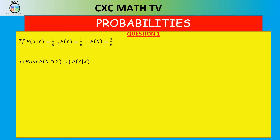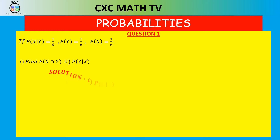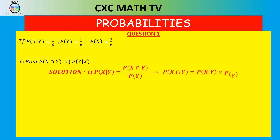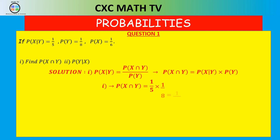The probability of X given Y is one over five, P(Y) is one over eight, and P(X) is one over six. To find P(X∩Y), we apply the formula: P(X|Y) = P(X∩Y) / P(Y). Transposing, P(X∩Y) = P(X|Y) × P(Y) = (1/5) × (1/8) = one over 40. So the probability that events X and Y occur simultaneously is one over 40.